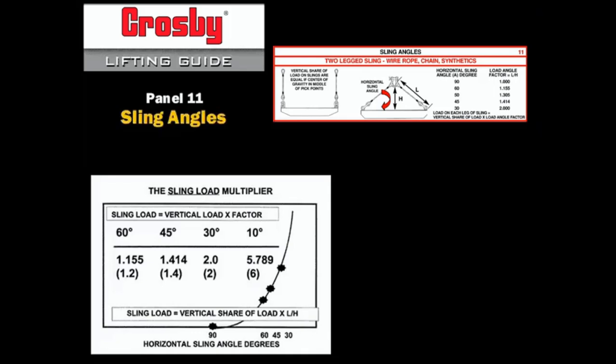It can be seen that at 60 degrees horizontal sling angle, the multiplier is 1.15 or 1.2 rounded off. For a 45 degree horizontal sling angle, the multiplier is 1.414 or 1.4 rounded off. For a 30 degree horizontal sling angle, the multiplier is 2.0.